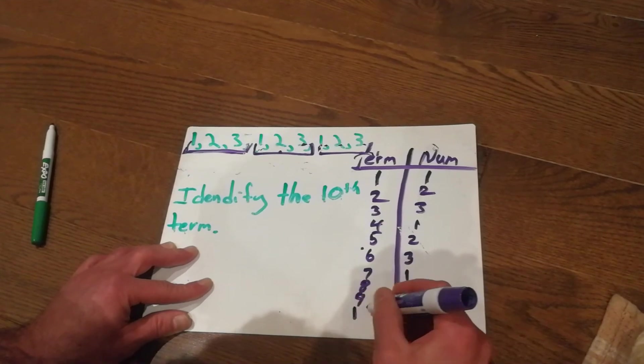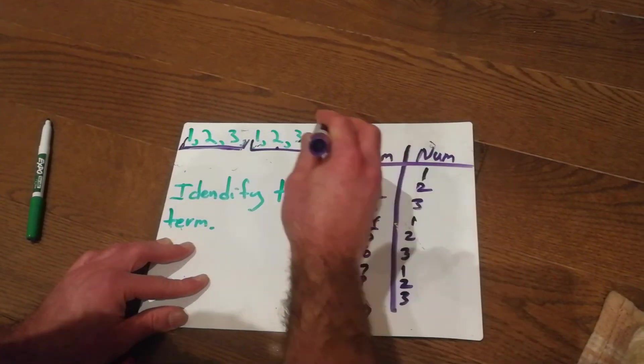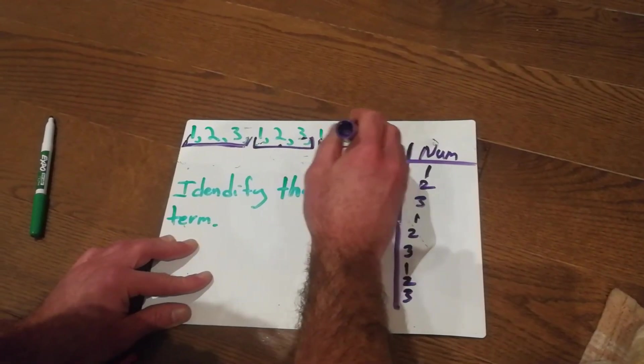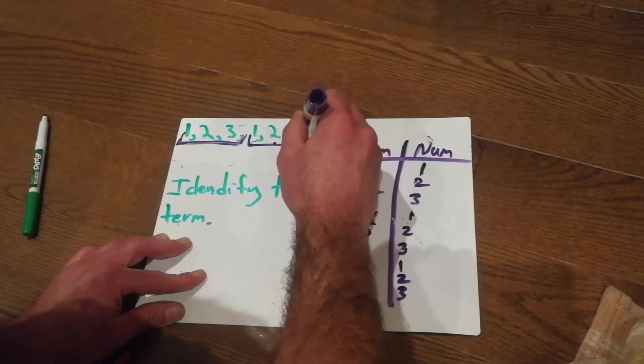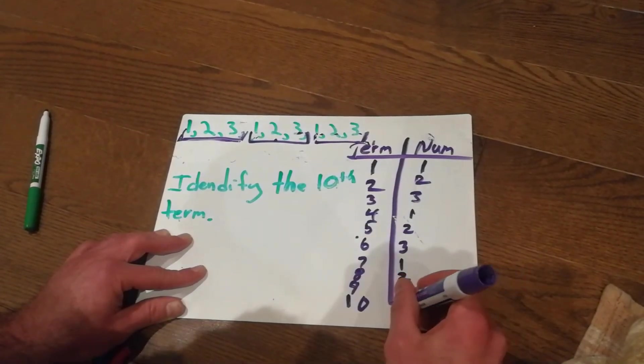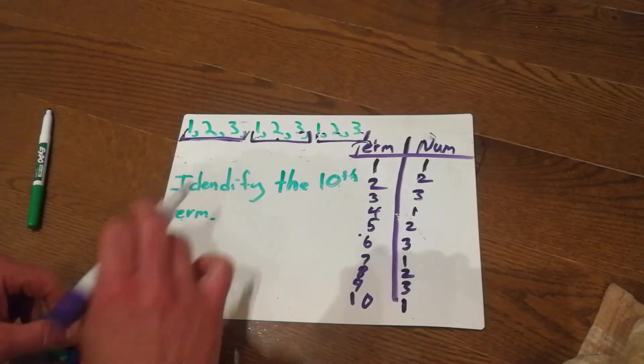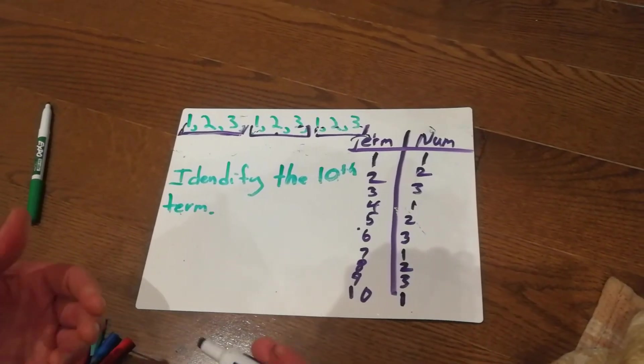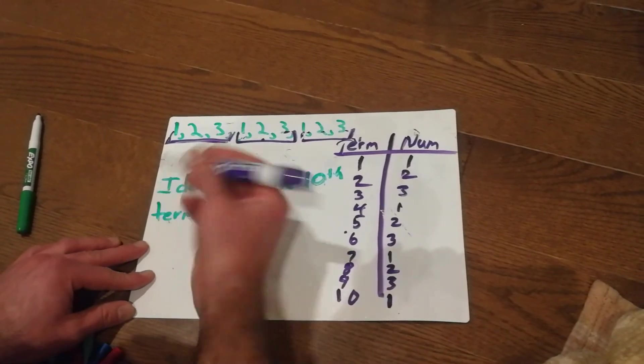Term 10, well, what would come next in our pattern here? Well, we would repeat with the pattern core, but the next term, we'd be back to number 1, wouldn't we? So, to answer my question, to identify the 10th term, the 10th term would be number 1, and I'd write that in a sentence.